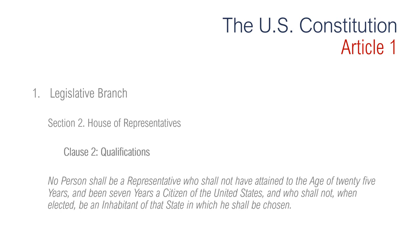Clause 2 of Section 2 is regarding qualifications. It says no person shall be a representative who shall not have attained the age of 25 years and been seven years a citizen of the United States, and who shall not, when elected, be an inhabitant of that state in which he shall be chosen. In modern terms, each member of the House must be at least 25 years old, a citizen of the United States for at least seven years, and a resident of the state in which he or she is elected.